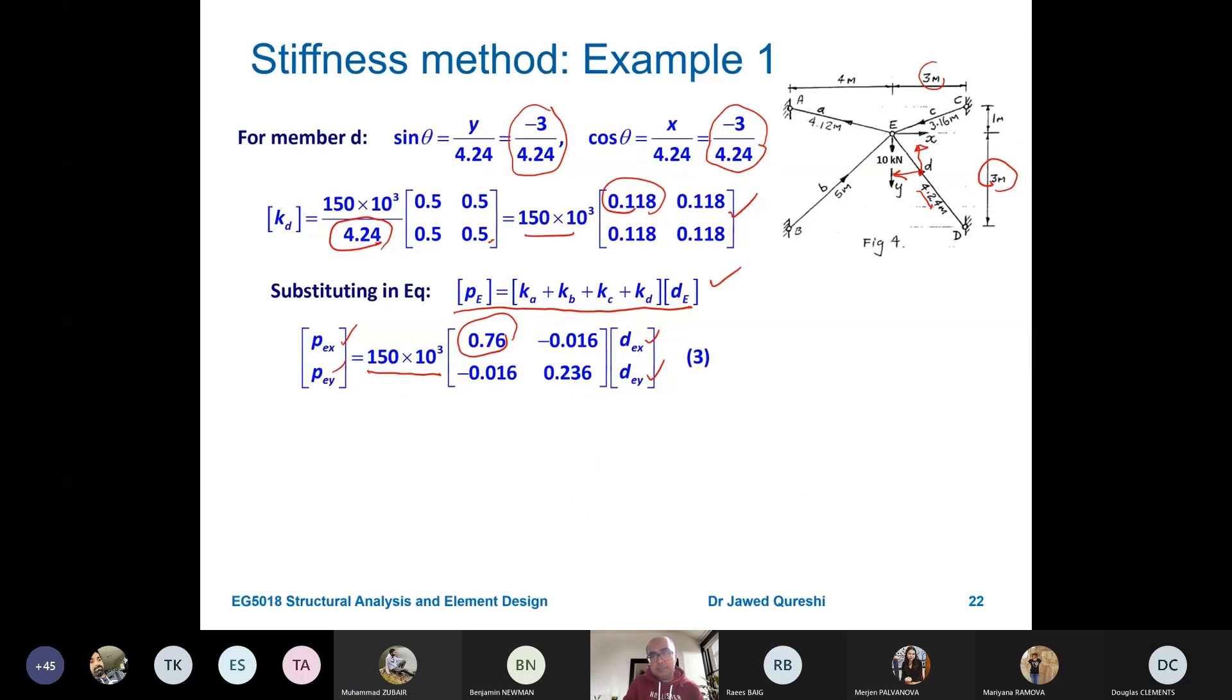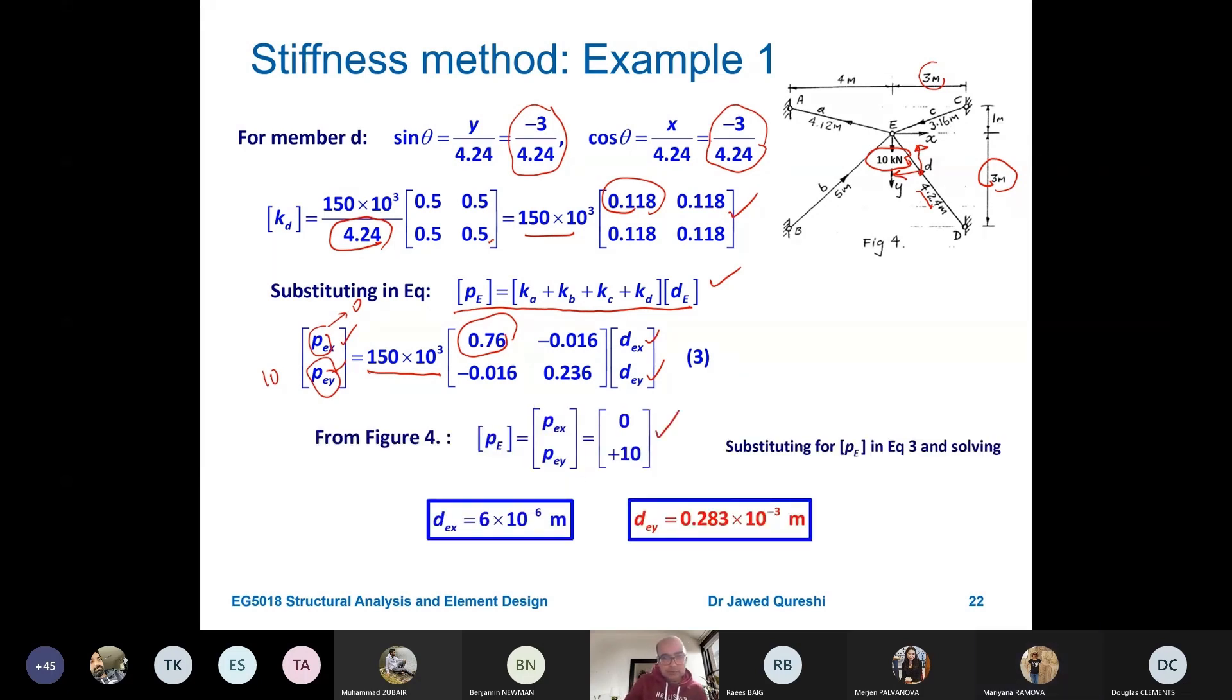Here you can see that force in x direction at point E and force in y direction. Force in x direction, I have nothing. Force in y direction, I have 10 kN and it is pointing towards the positive y direction. So can I say that PE, x is 0, PE, y is 10. Then it will give you two equations and then you solve these two equations to work out dE, x and dE, y. So simply it will result in two equilibrium equations. You multiply this with this one. So it will give you 0.76 into dE, x minus 0.016 dE, x plus 0.236 dE, y equal to 10. Simply you multiply rows of this matrix with displacement vector. This is simply matrix multiplication.